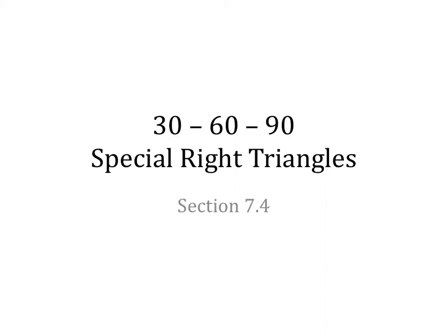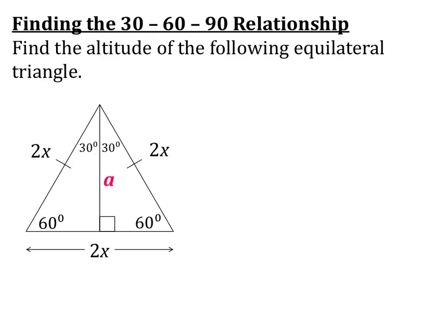Good evening everyone. Tonight we're going to be talking about 30-60-90 special right triangles. We are going to find the 30-60-90 relationship by finding the altitude of an equilateral triangle.